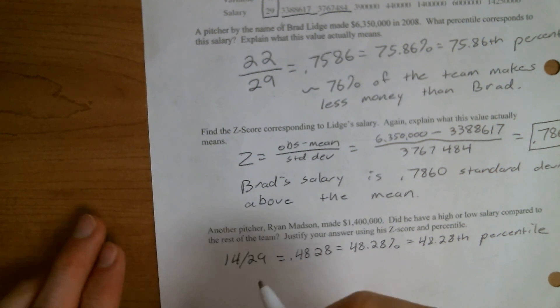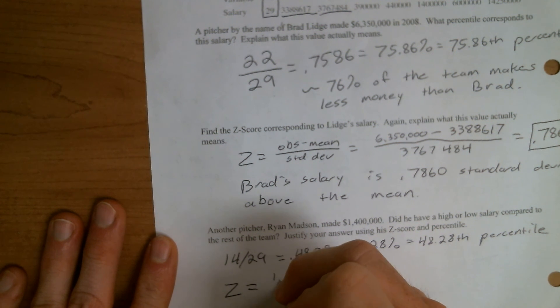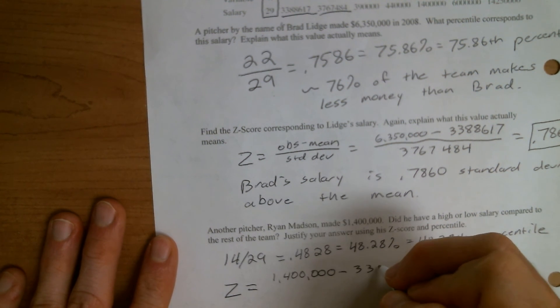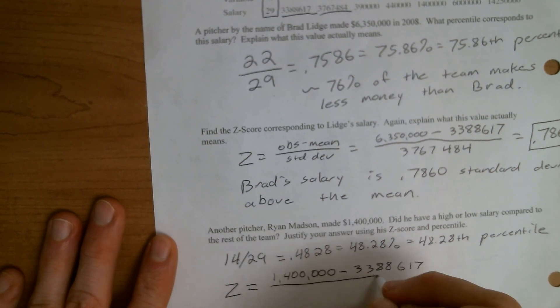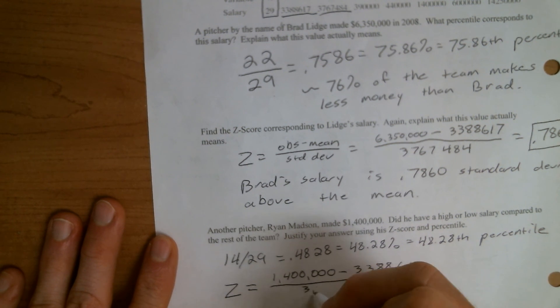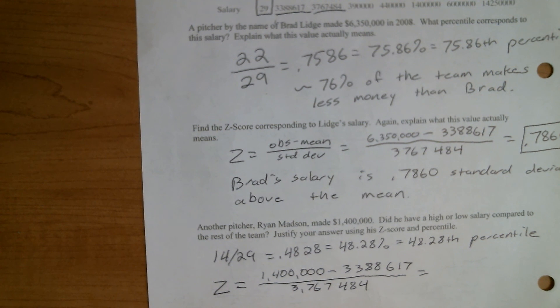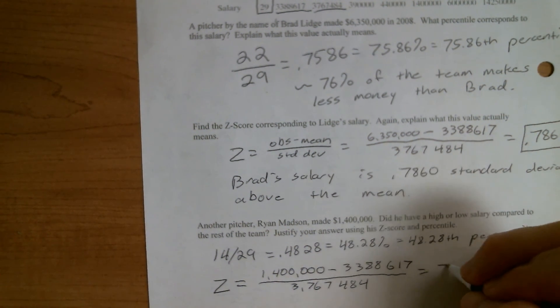Now let's see what his Z score says. So his Z score would be 1,400,000 minus the mean, which we saw was 3,388,617 divided by the standard deviation, which was 3,767,484. So if we type those numbers in and we work that out, first thing we can notice is that his salary is below the mean. So we are going to get a negative number here and that's totally fine when you're dealing with Z scores. A negative number just implies that you're below the mean and a positive number is that you're above the mean.